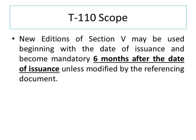New editions of Section 5 may be used from the beginning with the date of issuance and become mandatory six months after the date of issuance, unless modified by the referencing document. This statement is highly important from a project point of view. If a project document mentions to use the latest edition of the code, the new edition is to be used at least after six months of its issuance.